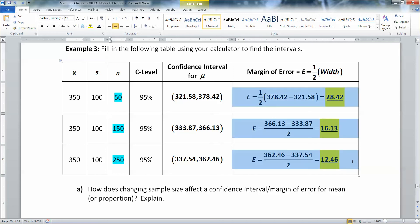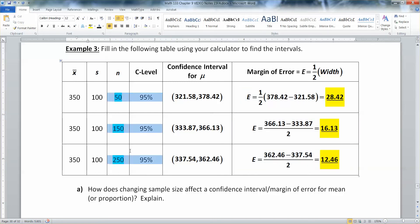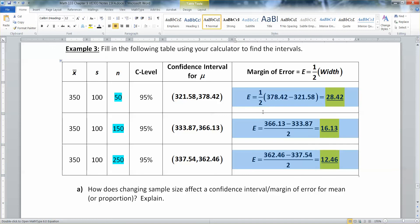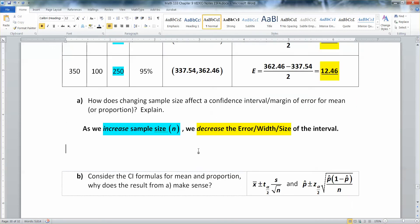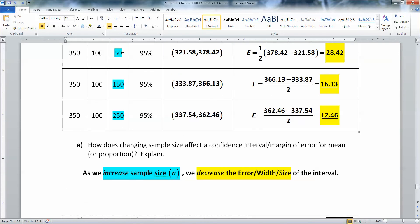Our error gets smaller and smaller. Which makes sense, right? Because we're learning more and more about our sample and our population. As we learn more about our population. We're more accurate. We're more precise with our intervals. So what we're seeing is that as n increases. As these blue numbers get larger and larger.